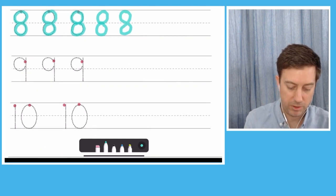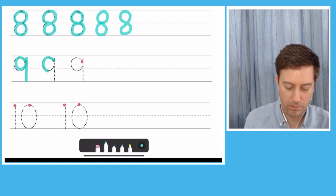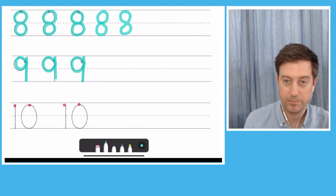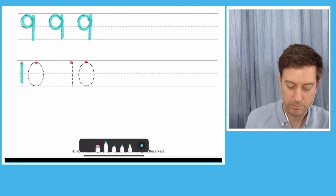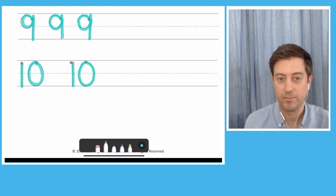Alright, let's do the nine, around and then down. Around and then down. Around and then down. And we're already at ten, so down, around, down, around, okay.